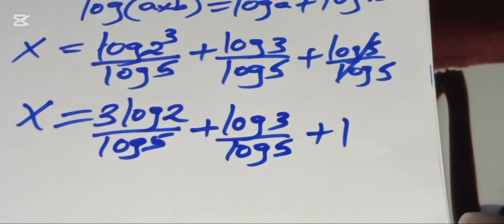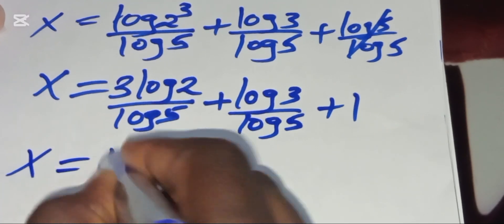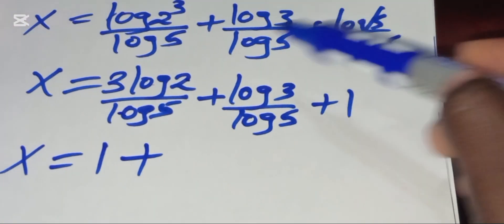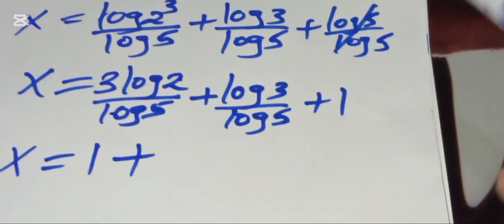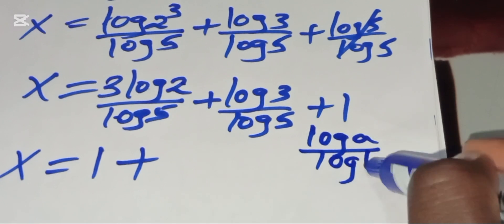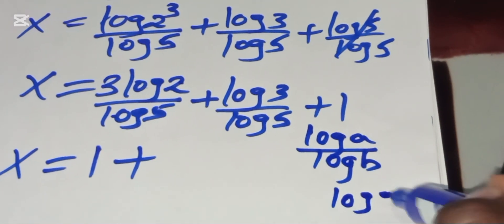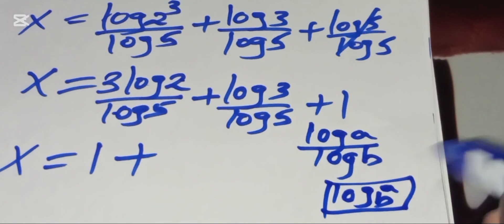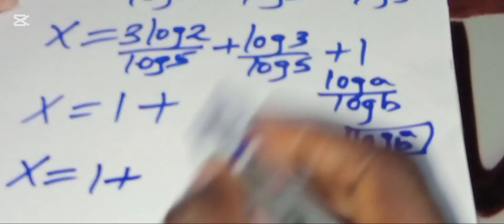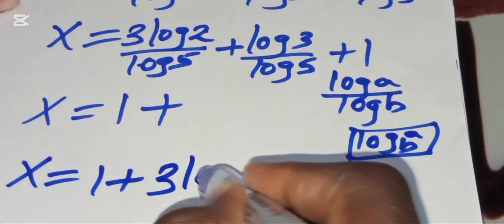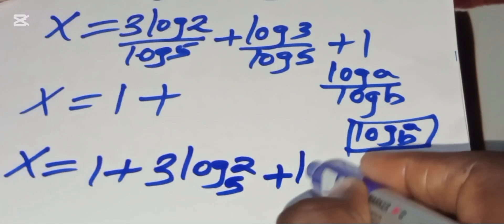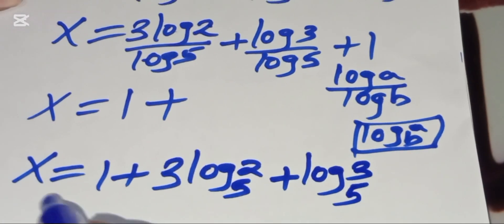We can write x as 1 plus 3·log(2)/log(5) plus log(3)/log(5). Each ratio log(a)/log(b) is in the form of log base b of a, so x = 1 + 3·log₅(2) + log₅(3). This is our value of x.